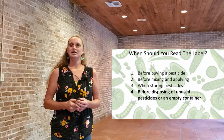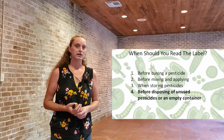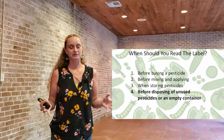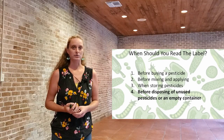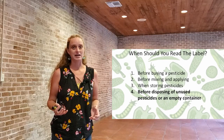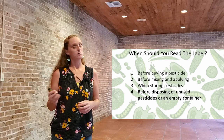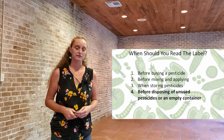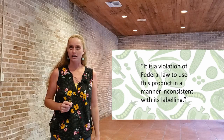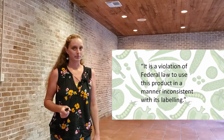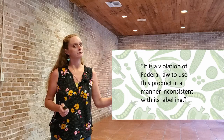You should also read the label before disposing of any unused pesticide or empty container. One of the best ways to use a pesticide is to just spray it out in the environment properly following labeled instructions. A lot of municipalities support a pesticide cleanup or collection day — typically twice a year. Even just the empty container has residue on the inside, and you don't want to reuse it, so there will be instructions for disposing of it properly on the label. The label is the law — it is a violation of federal law to use a product in a manner inconsistent with its labeling.